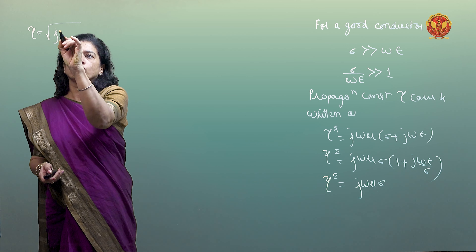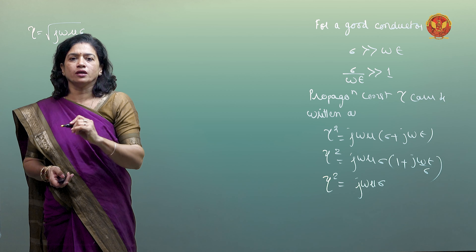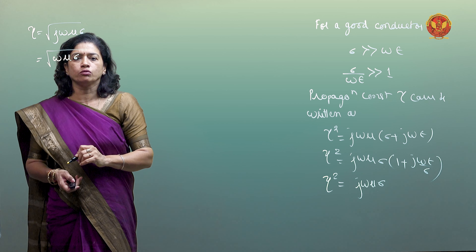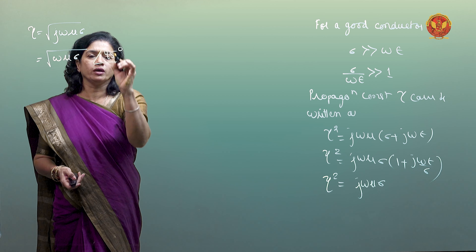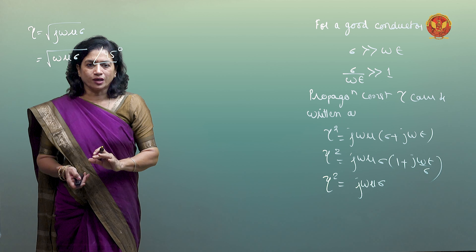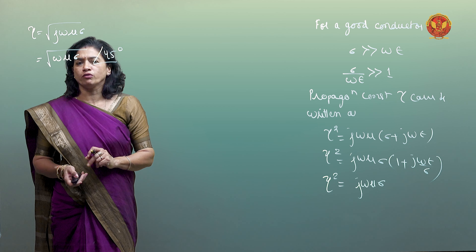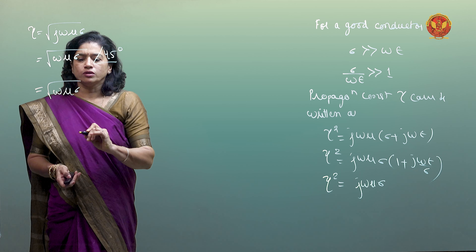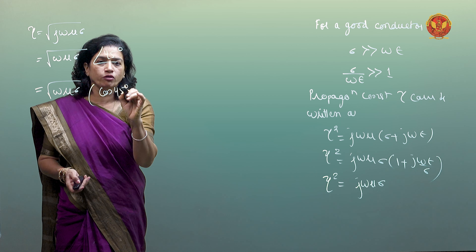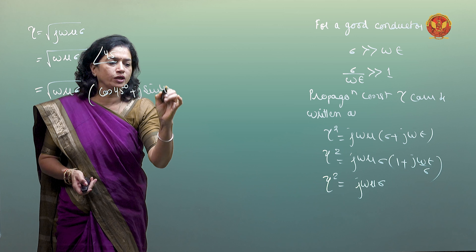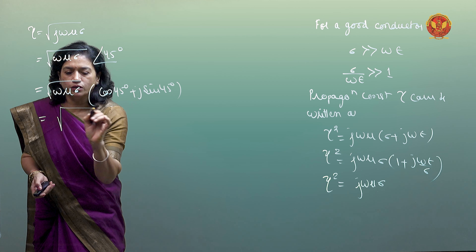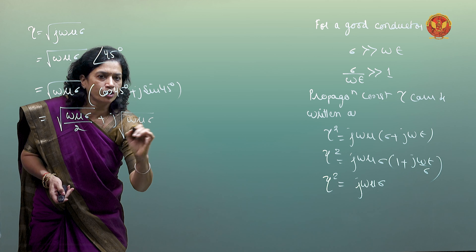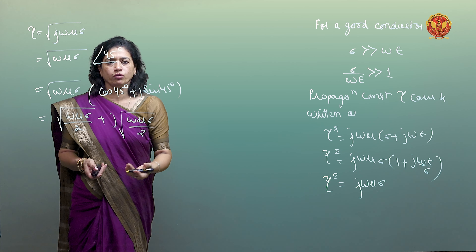Gamma equals the square root of j omega mu sigma. We can use the angular form of j to the power 1/2. The magnitude is under root omega mu sigma, and using the angular form, j to the power 1/2 gives an angle of 45 degrees, since cos 45 and sin 45 are both equal. So gamma equals under root (omega mu sigma by 2) times (1 plus j).